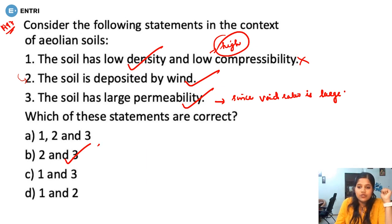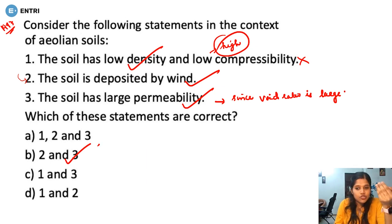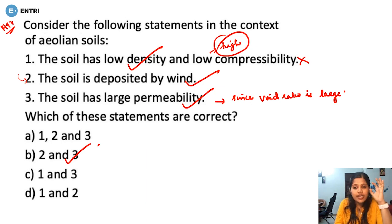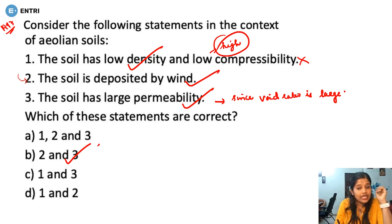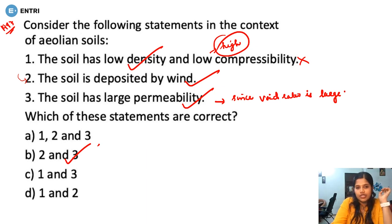Statement 1 mentions low compressibility, but Aeolian soils actually have high compressibility. So statement 1 is incorrect. Option A would be 1, 2, and 3 all correct, but that is wrong. Statements 2 and 3 are the correct answer.